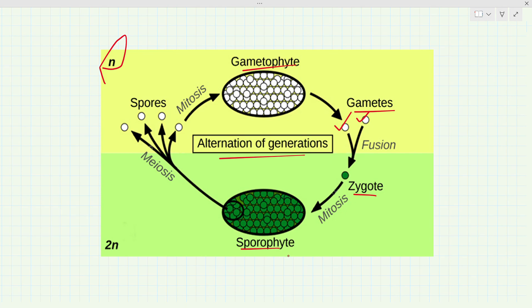The sporophyte is also a diploid structure, so the zygote forms the sporophyte by mitosis. Then the sporophyte forms spores — but since the sporophyte is diploid and spores are haploid, the sporophyte forms spores by meiosis. Then spores form the gametophyte by mitosis, because spores and gametophyte are both haploid structures.